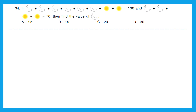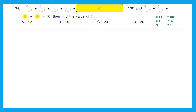Question 34: If 6 moons plus 2 suns equals 130, and 2 moons plus 2 suns equals 70, find the value of 1 moon. From the second equation, 2 moons plus 2 suns equals 70. Substituting into the first equation: 4 moons plus 70 equals 130. Taking 70 away from both sides gives 4 moons equals 60. Dividing both sides by 4, 1 moon equals 15. The right answer is option B, 15.